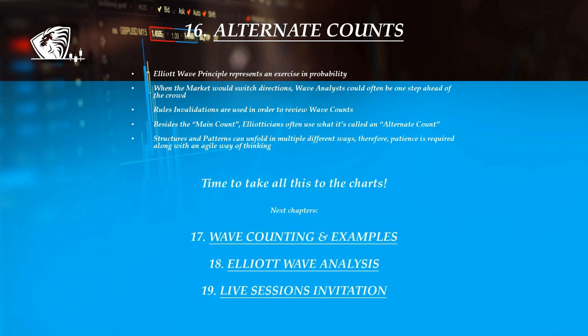It's time to take all this to the charts. Next we're going to go over some wave counting examples and make some projections together. For the analysis, a symbol from each category will be used — whether it's a forex pair, an index, a cryptocurrency, or a commodity. Stay tuned!